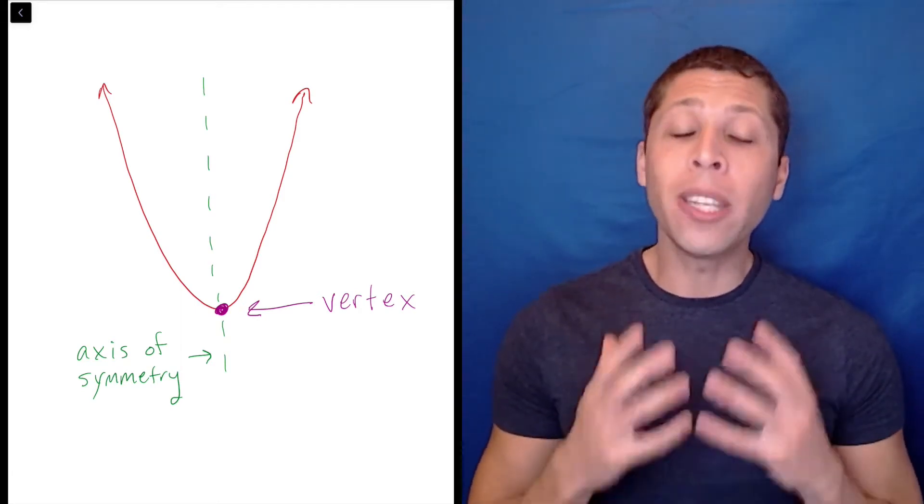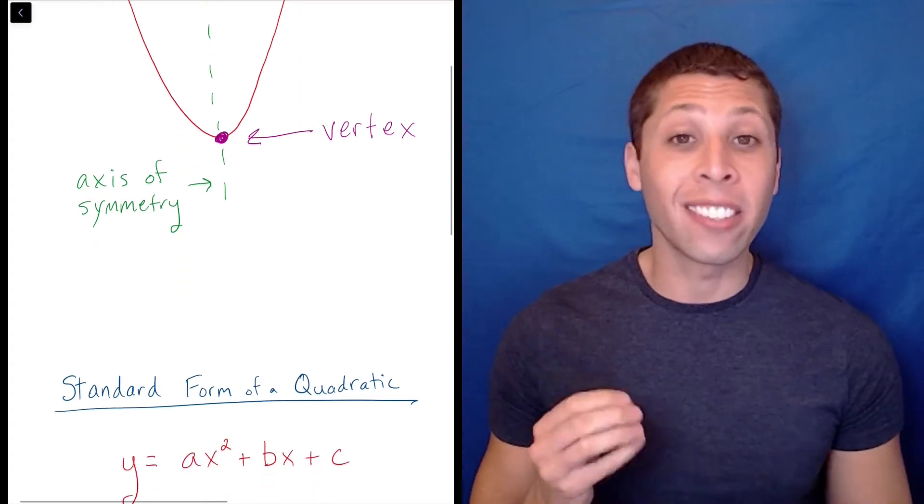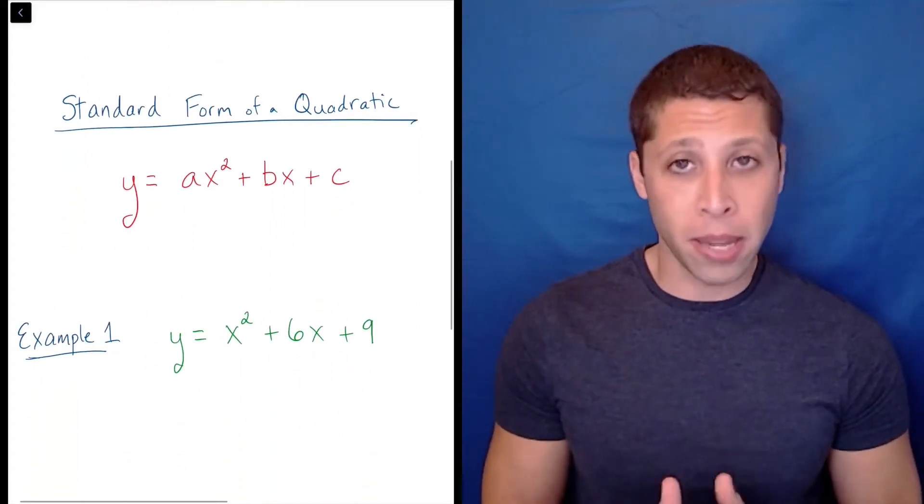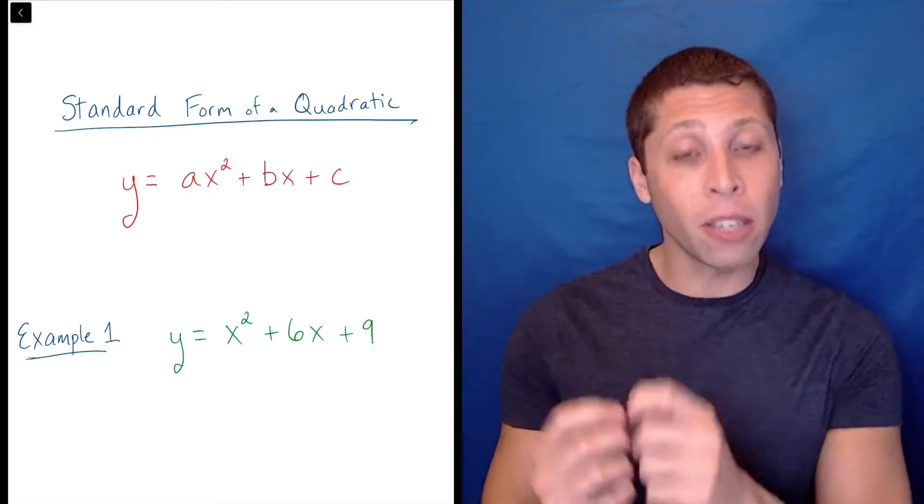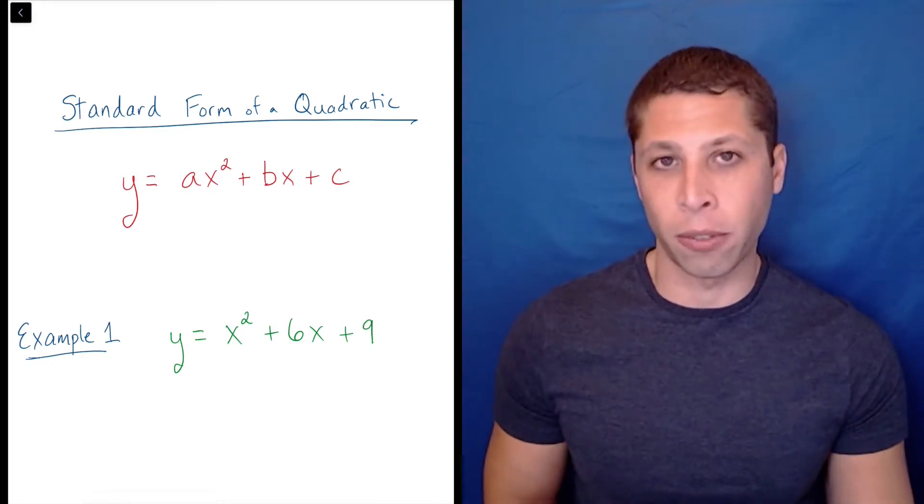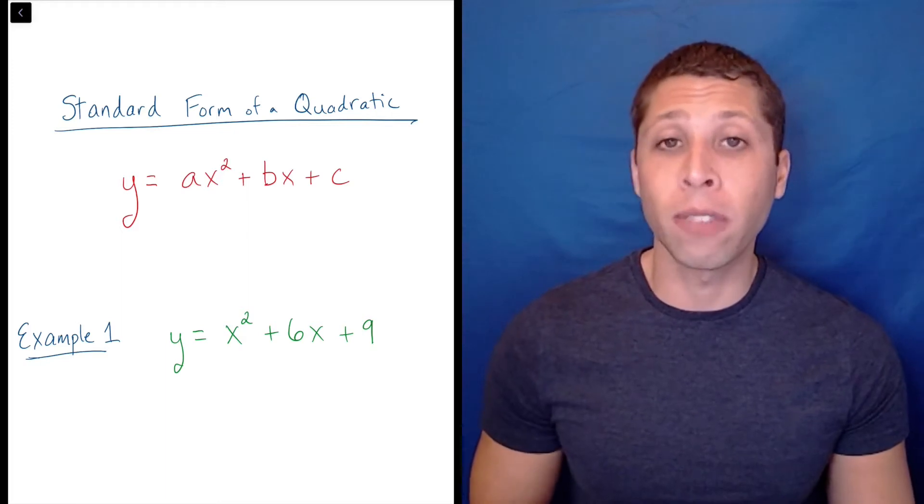To start, we need to have a quadratic equation in standard form: ax² + bx + c. Match up the specific equation that you're given with the general version of the standard form equation to find the values of a, b, and c.